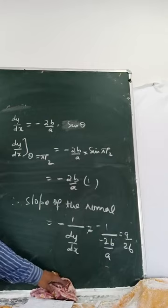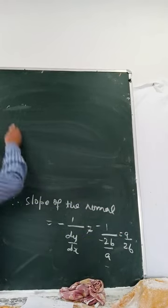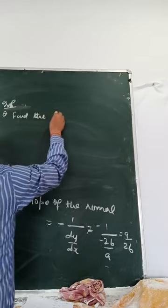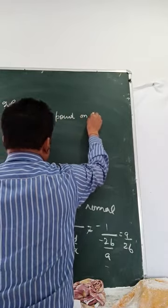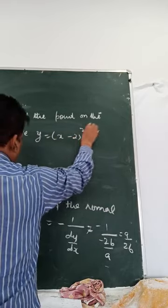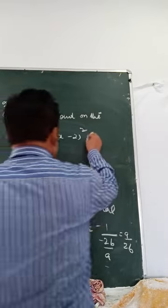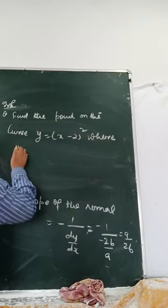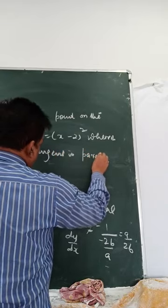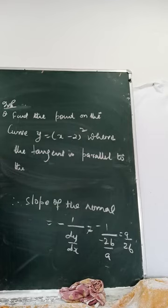Next question: Find the point on the curve y equals x minus 2 whole squared where the tangent is parallel to the chord joining the points (2, 0) and (4, 4).